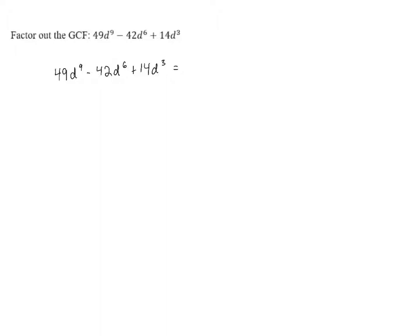And then we're going to look for the greatest common factor. If we look at the coefficients 49, negative 42, and 14, these are all divisible by 7. And 7 is the largest number that they're divisible by. So the coefficient of the greatest common factor is going to be 7.